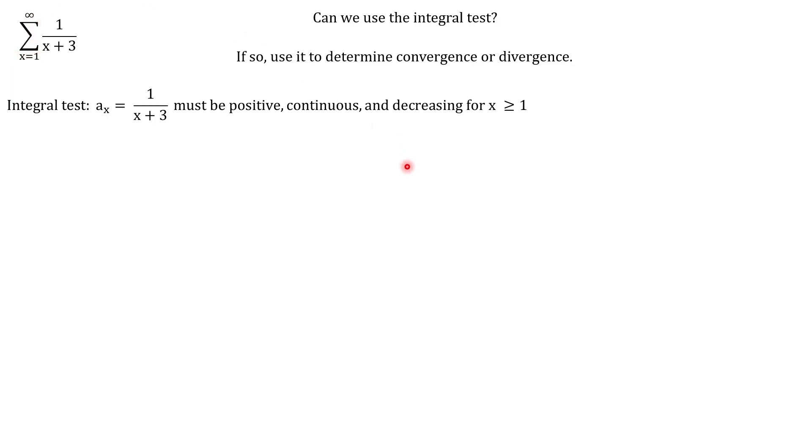And so the first question we need to ask ourselves here is, is this function positive? Now if we look at this function here, the numerator is a 1, which is always going to be positive. And the denominator of x plus 3, if we're plugging in x is greater than or equal to 1, we're always plugging in a positive number, meaning that this denominator is also always going to be positive. There is not a single value for x greater than or equal to 1 that could make this denominator negative. And so the answer to our first question is yes, our function is positive for x greater than or equal to 1.